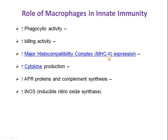Summing up the role of macrophages in innate immunity: they can increase phagocytic activity and increase killing activity by stimulating different immune cells within the body. They can also express Major Histocompatibility Complex type 2 (MHC II), which helps to stimulate the immune system and the development of different immune cells.